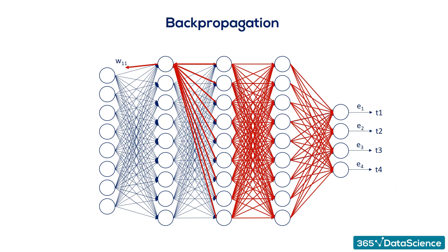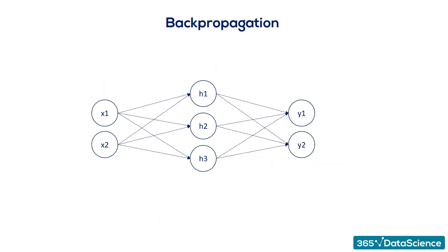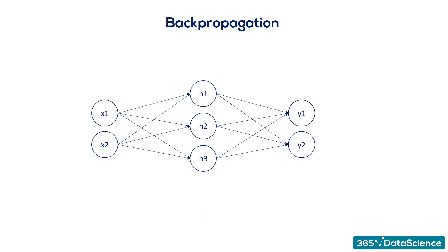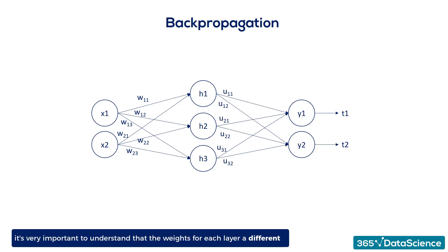In the next lesson, we will provide an illustration of the backpropagation concept. Our net is quite simple — it has a single hidden layer. Each node is labeled: we have inputs x1 and x2, hidden layer units, output layer units y1 and y2, and targets t1 and t2. The weights are w11, w12, w13, w21, w22, and w23 for the first part of the net. For the second part, we named them u11, u12, u21, u22, u31, and u32, so we can differentiate between the two types of weights.